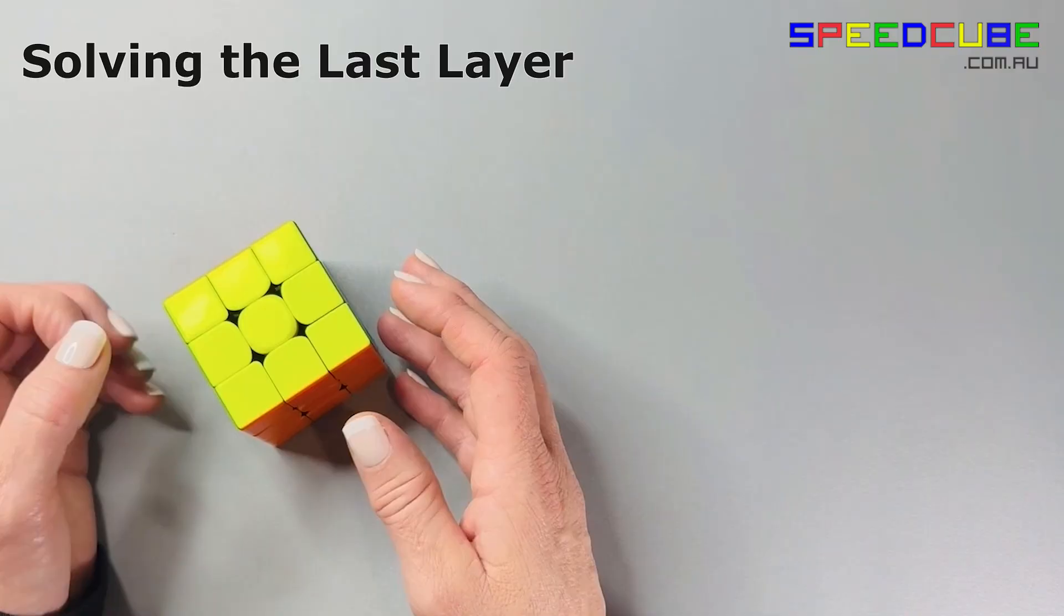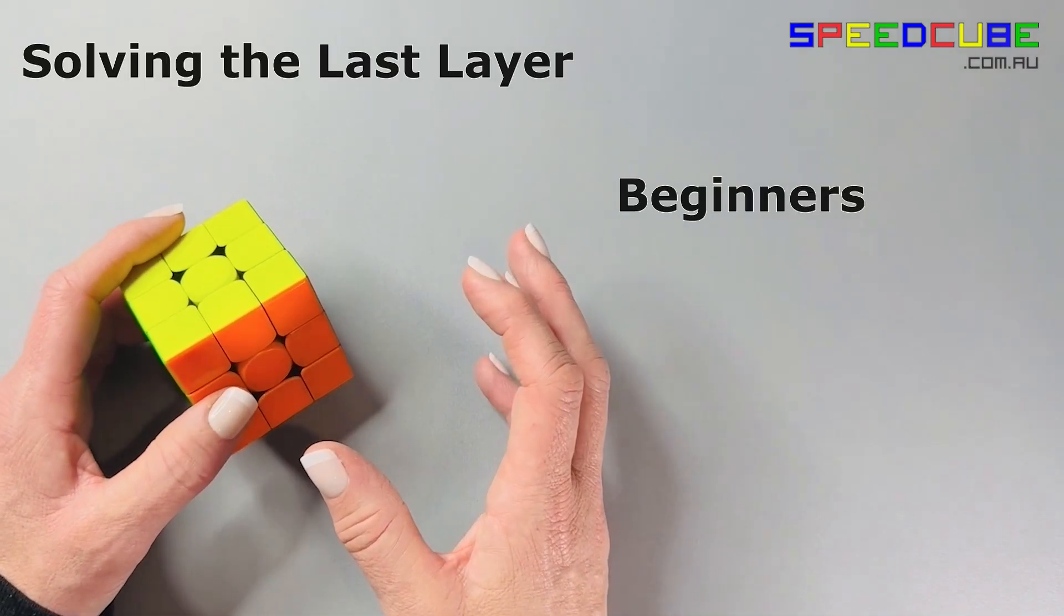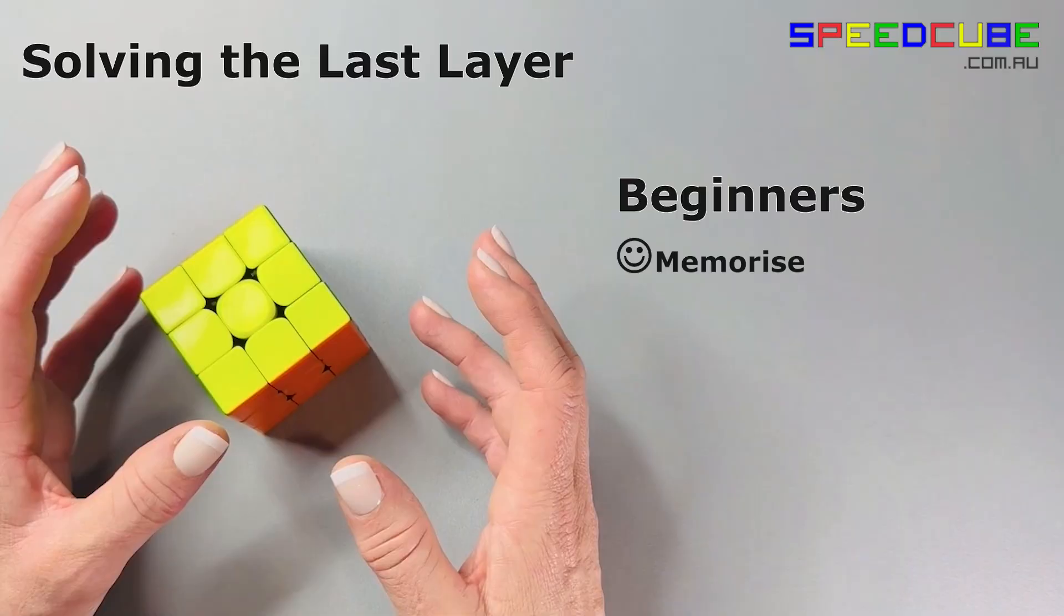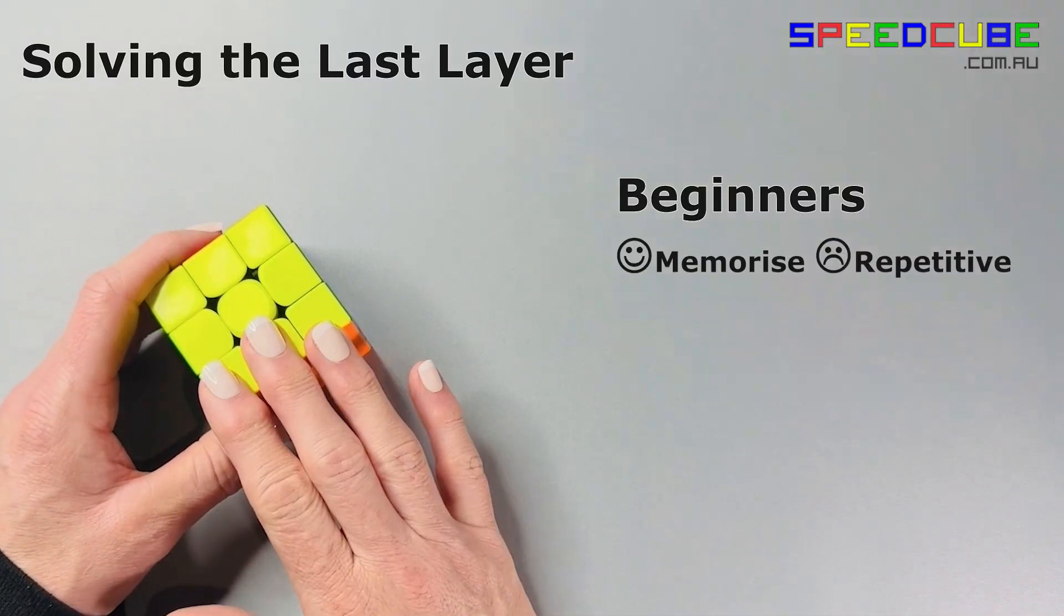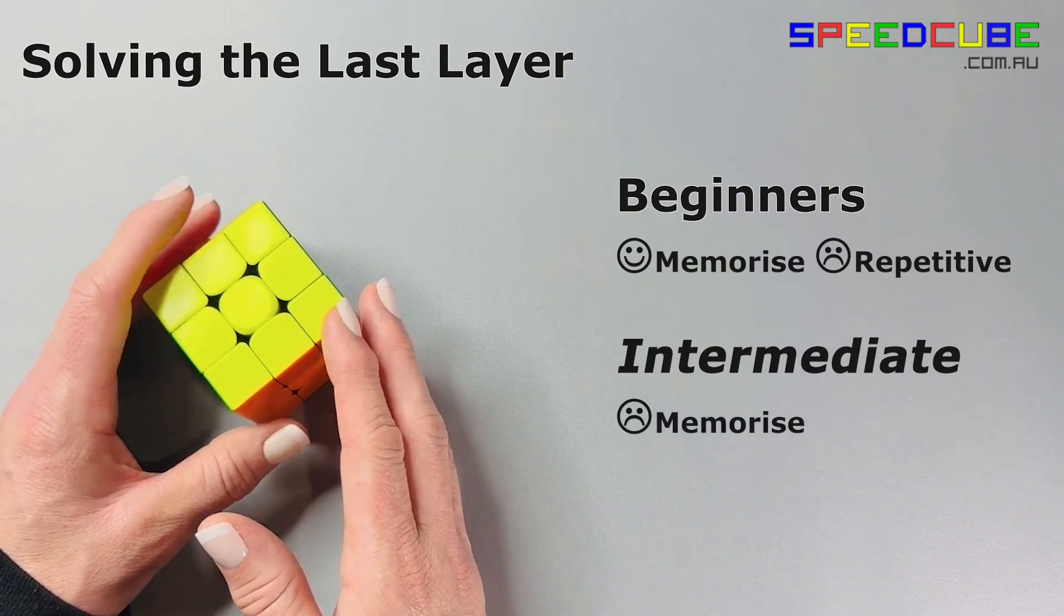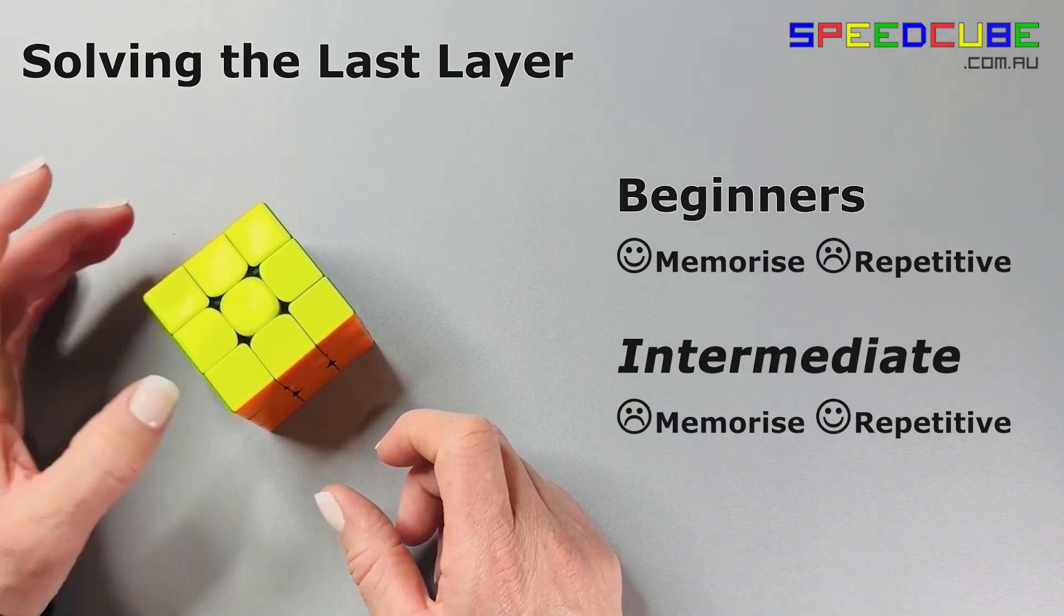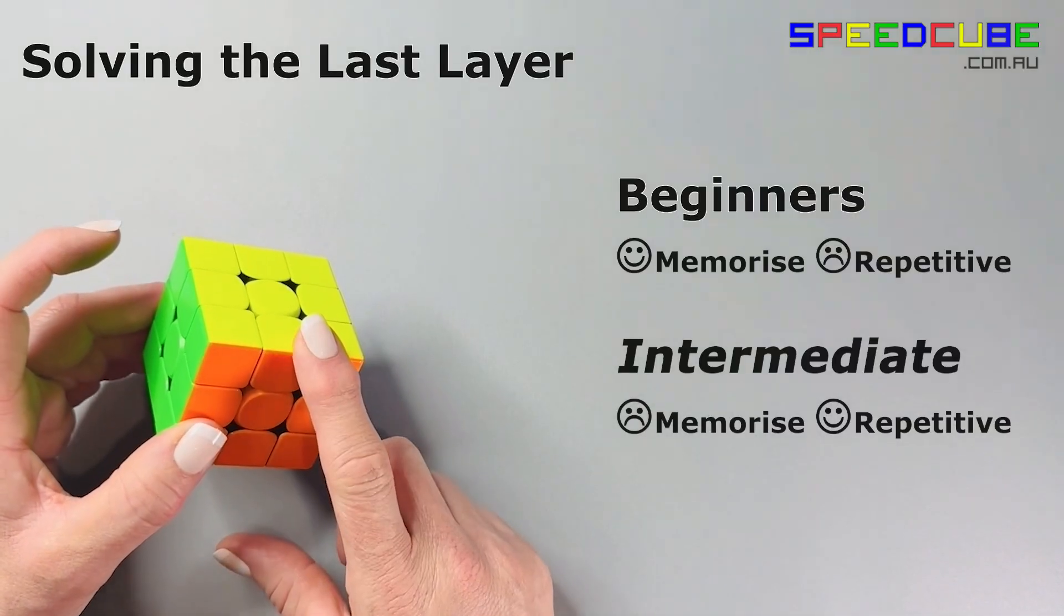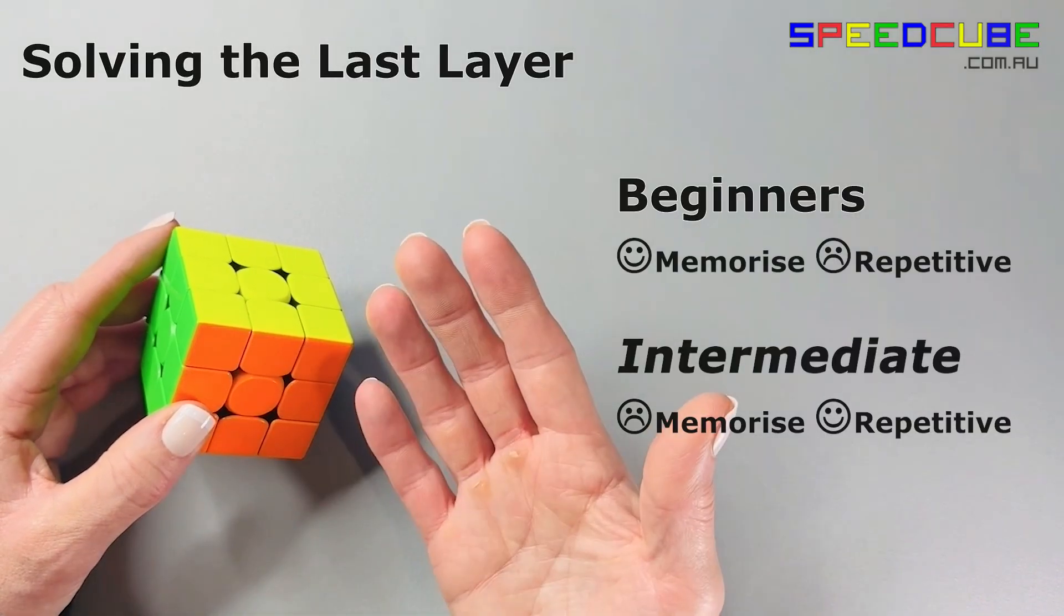So which method should you learn? The Beginner Method uses shorter, easier-to-remember algorithms with patterns, but it can be quite repetitive. The Intermediate Method has longer, trickier algorithms, but it cuts down on that repetition. Most importantly though, the Intermediate Last Layer Method is the foundation for CFOP.